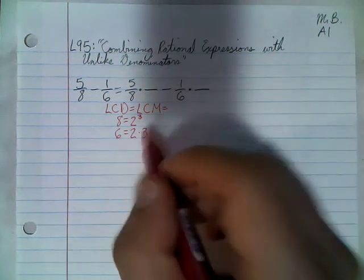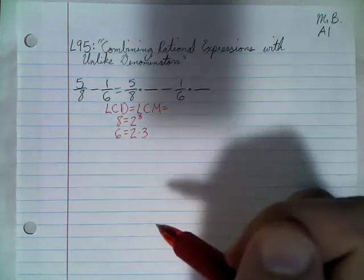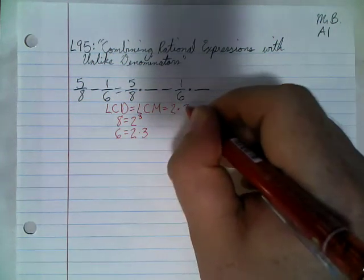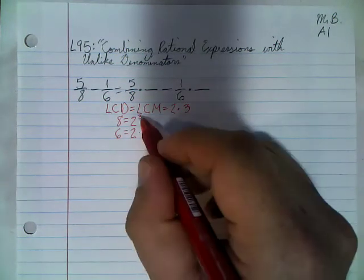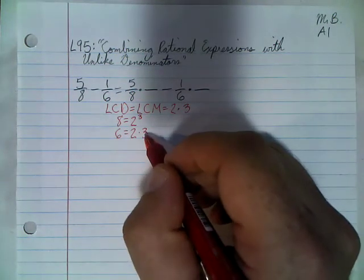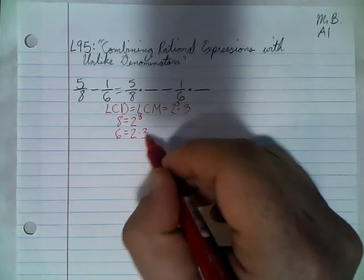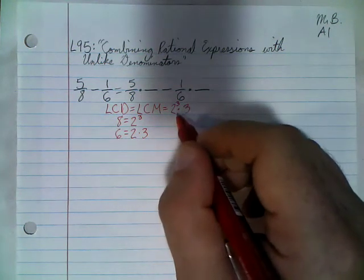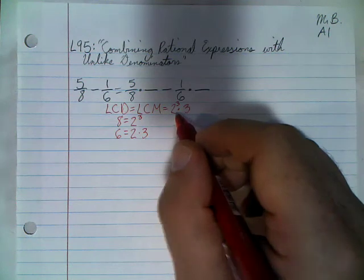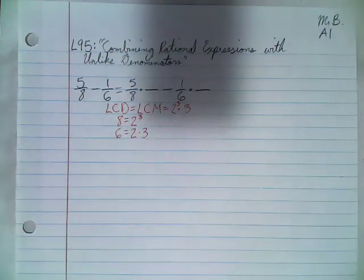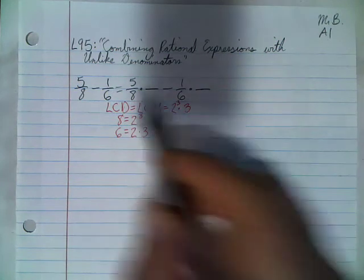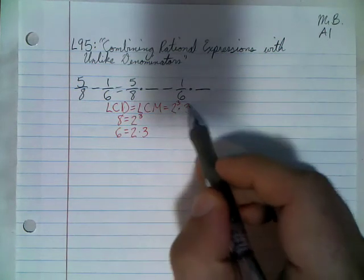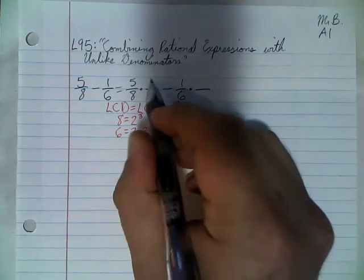My LCM is going to take each of these prime factors — the 2 and the 3 — and give each of them the highest exponent. The highest exponent on the 2s is a cube, and the highest exponent on 3 is just 3 to the first power. So that is my least common denominator. For 5/8, this is 2 to the third power, so I already have the 2³ and I just need a 3 multiplied with it.